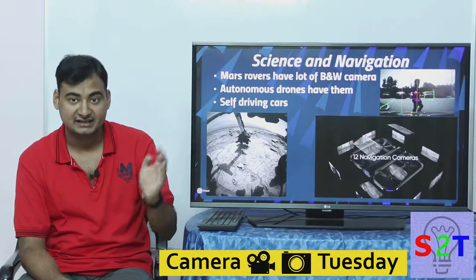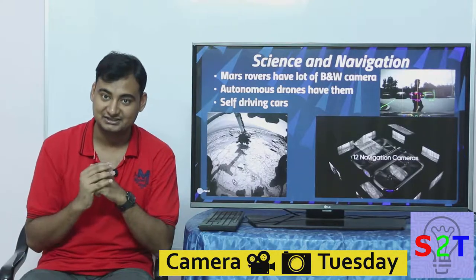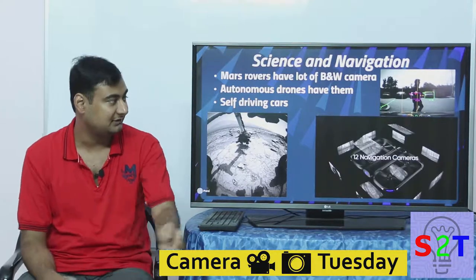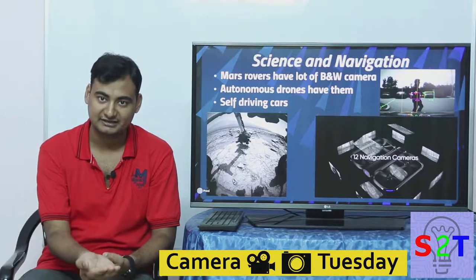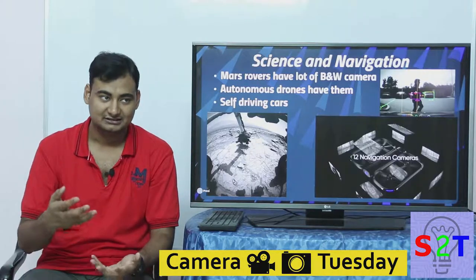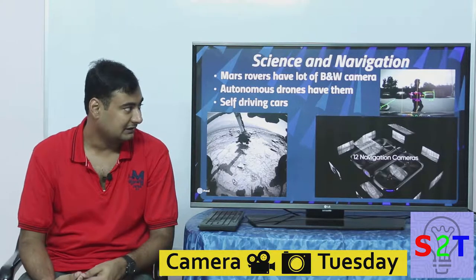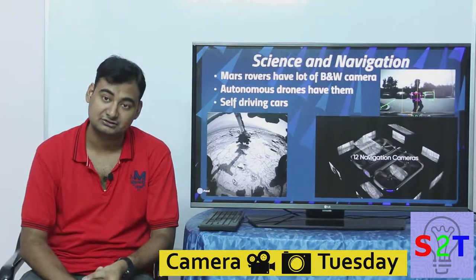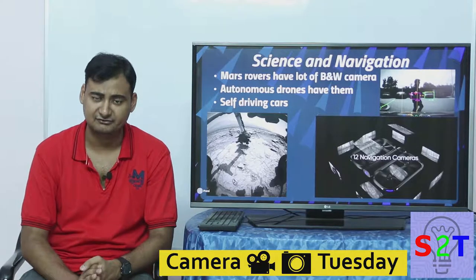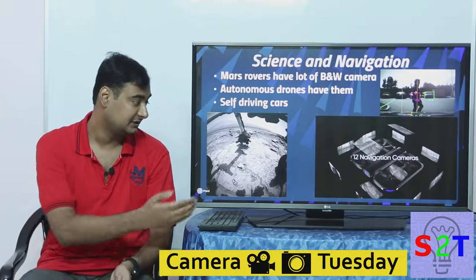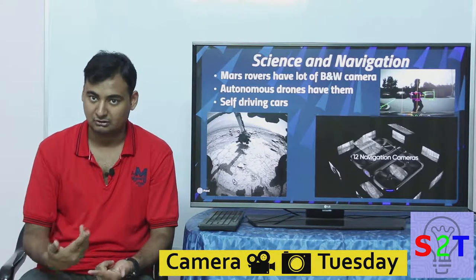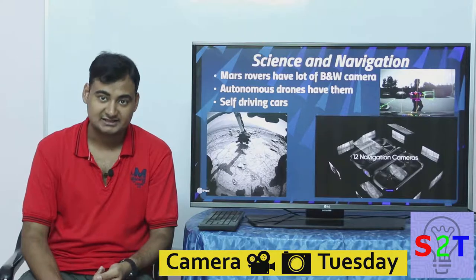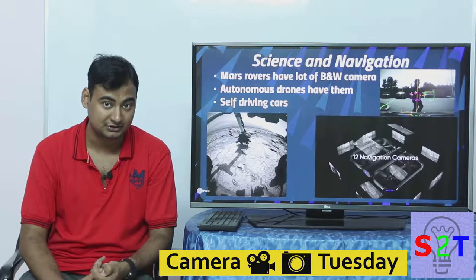Let's dive into the core reason black and white cameras are used in more modern contexts: science and navigation. Self-driving cars will have black and white cameras simply because color information is useless for that purpose — you just need to know whether the object in front of you is a car or a truck. Mars rovers also carry many black and white cameras and only a few color cameras; for navigation they rarely use color cameras. You get better resolution, low file sizes, and faster processing speed.